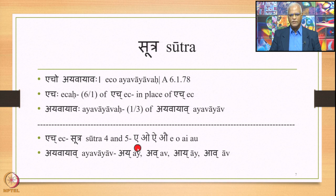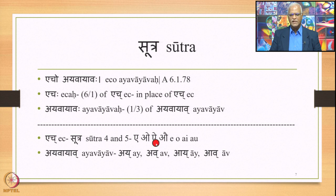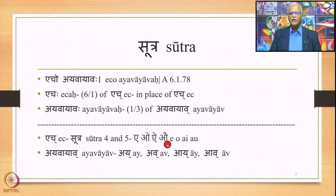We have already studied examples of E and O when followed immediately by an Ach or a vowel in Samhita mode, where E is substituted by Ay and O is substituted by Av. Now in this lecture, we shall see examples where Ay is followed by an Ach and gets substituted by Ay, and where Av is followed immediately by an Ach and gets substituted by Av.